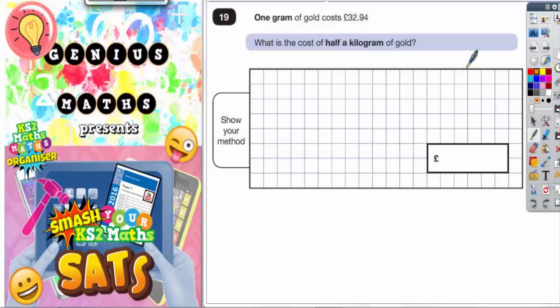Question 19. One gram of gold costs £32.94. What is the cost of half a kilogram of gold?